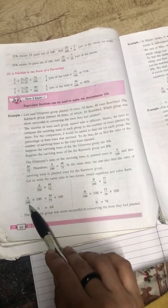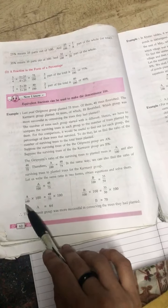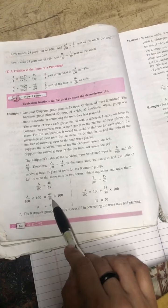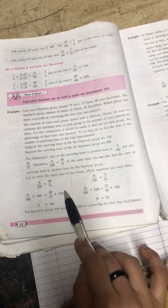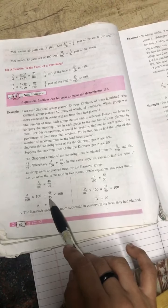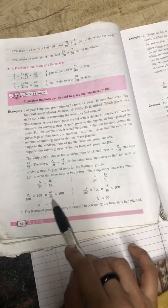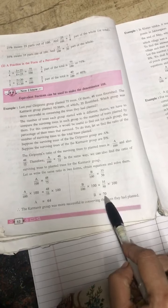Now we write a upon 100 into 100. To find out the percentage, we have to multiply 100 on both the sides. So multiplying 100 on both the sides, a upon 100 into 100 is equal to 48 upon 75 into 100. So here 100 goes, so a is equal to 48 upon 75 into 100. Multiply 75, divide 75 with 100, you get the answer 64. And here you divide 50 with 100, you get the answer 70.